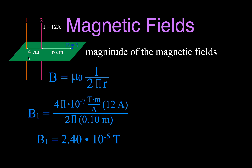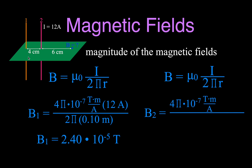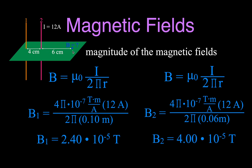We also want to know the magnetic field strength from wire number two, since we have two wires and we're going to superimpose the magnetic fields from each of them. The equation is the same — the constant and current are the same — the only difference is the distance, which is 6 centimeters, so this gives 4.0×10⁻⁵ teslas. This magnetic field strength is greater because wire number two is closer to the point, and magnetic field strength is inversely proportional to distance.